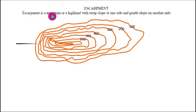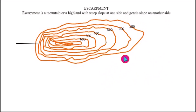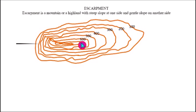Escarpment is a mountain or a highland with a steep slope on one side and a gentle slope on the other side. We know this is a mountain or highland because the calibration is from 100 to 800. This contour is 600, the next is 700, and the last contour is 800. The contour interval is 100. We have been introduced to contour lines indicating steep slope and contour lines indicating gentle slope.